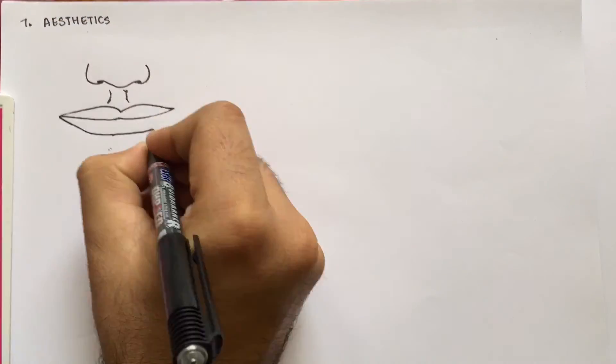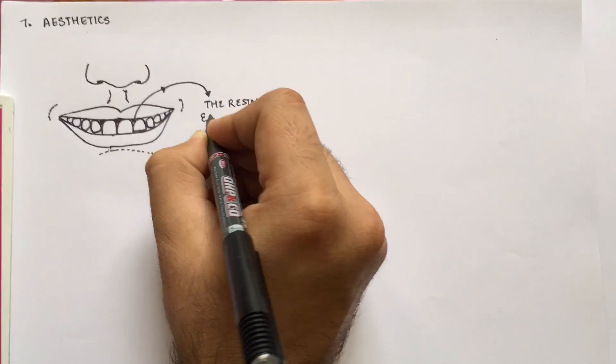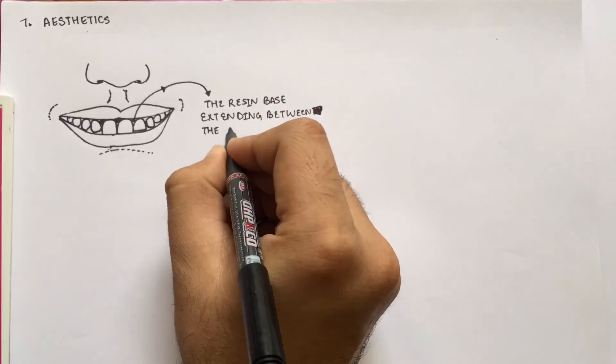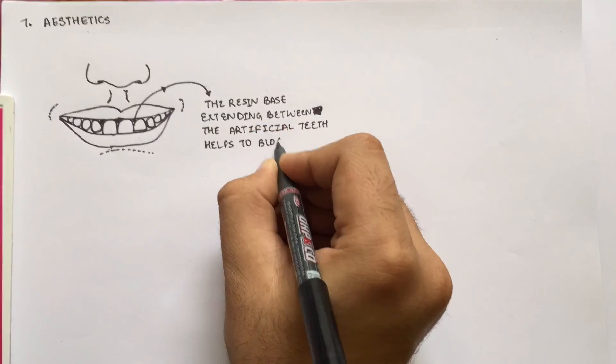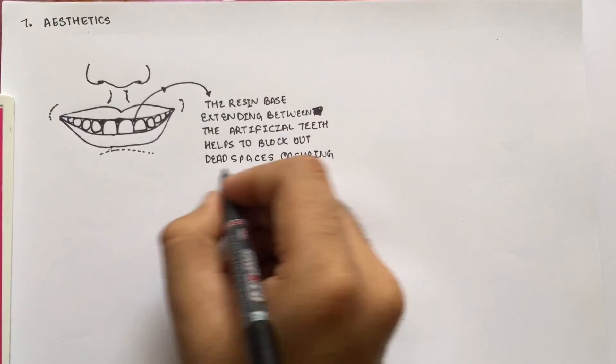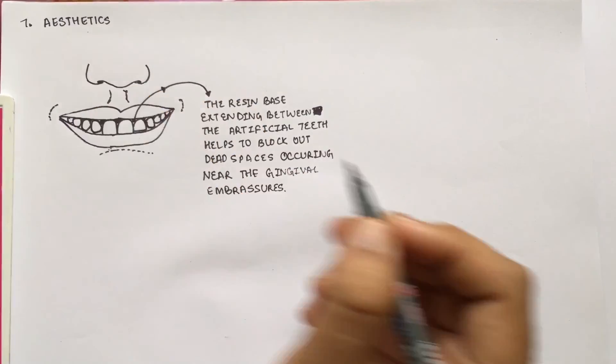The seventh factor is aesthetics. RPDs provide better aesthetics because the denture base gives the appearance of natural teeth arising from the gingiva. The resin base extending between the artificial teeth also helps to block out dead spaces occurring near the gingival embrasures, which is a common problem in FPD.